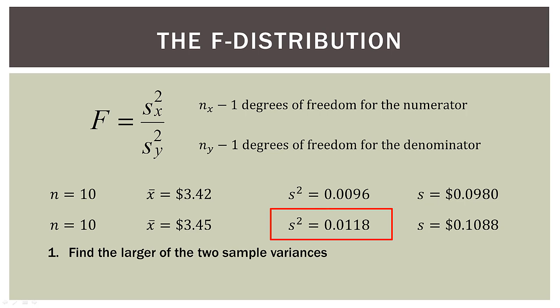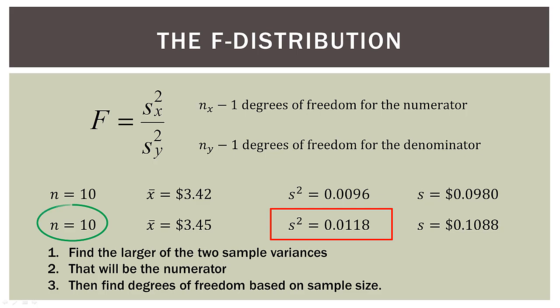So in this case, it is the second one. So 0.0118, that will be the numerator in our F ratio. Then we find the degrees of freedom based on sample size. Now this is easy, because they are both 10, so the degrees of freedom on top and bottom are both nine.